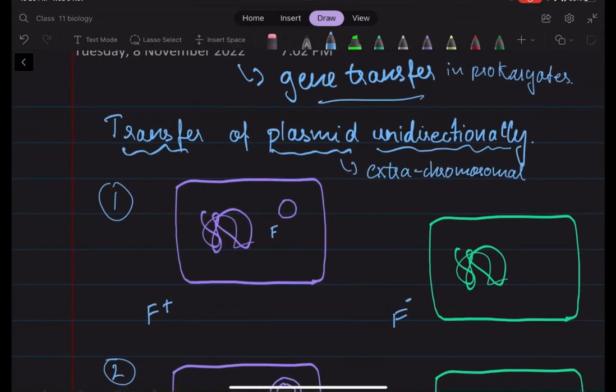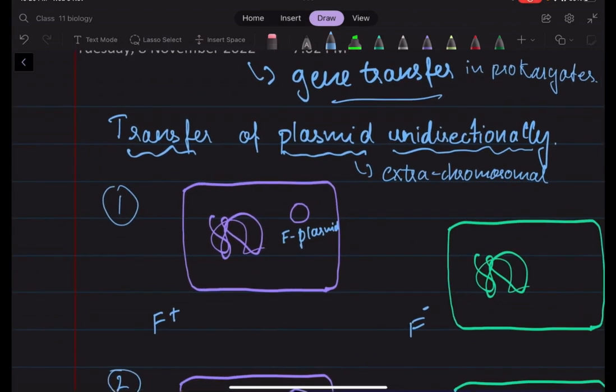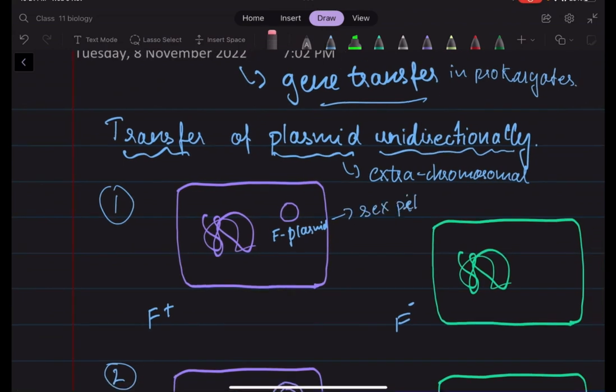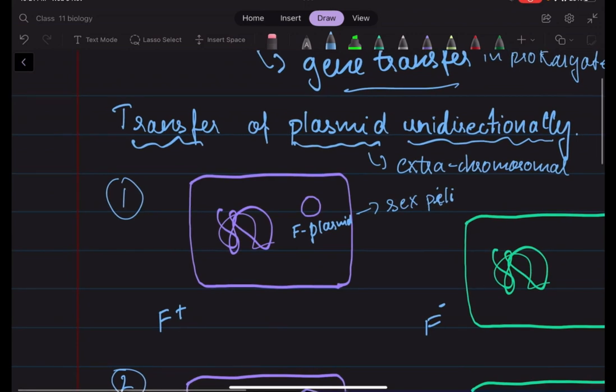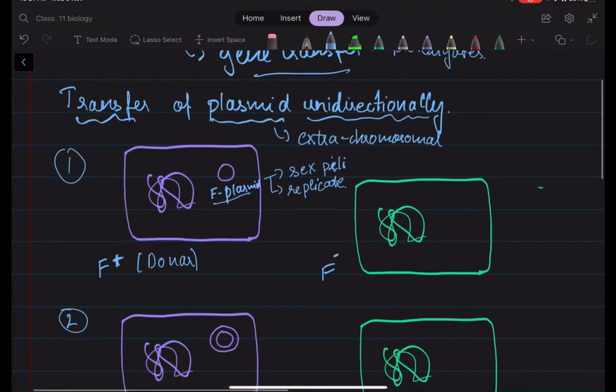And this plasmid, it confers a unique property to the bacteria, that is to develop a sex pili. This plasmid also has the ability to replicate. So firstly, we have two bacterial cells over here. We call the one having the F-plasmid as the F+. This is basically the donor cell. And we call this F- as the recipient cell.